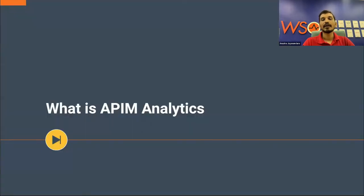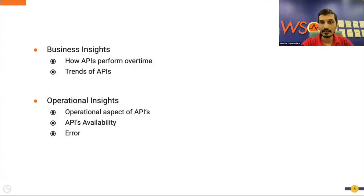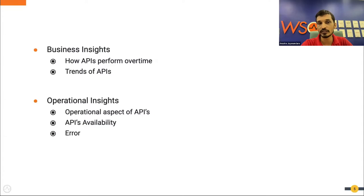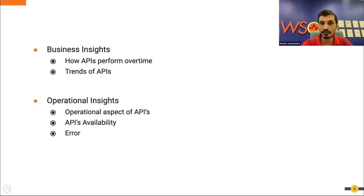When we talk about API manager analytics, there are two main insights we expect from an analytics solution. One is business insight and the second is operational insight. In business insight, we mainly focus on how APIs perform over time, trends of API usage, and trends of application usage. For operational insights, we focus on operational aspects of the API: availability, errors that occur, latency, and how throttling has worked.